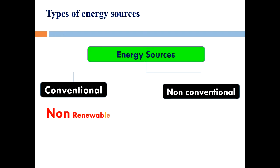Conventional energy sources are called non-renewable energy sources — you cannot renew or reproduce them easily. On the other hand, non-conventional energy sources are called renewable energy sources, meaning you can renew that energy even if you are using it repeatedly. Solar energy, for example, is inexhaustible — you can use it again and again.